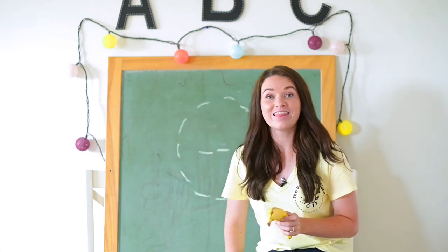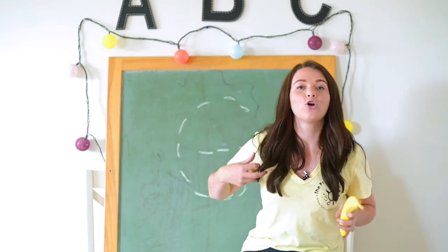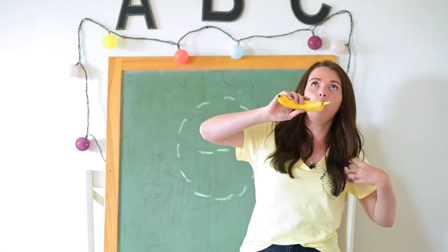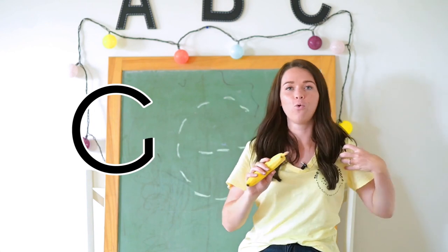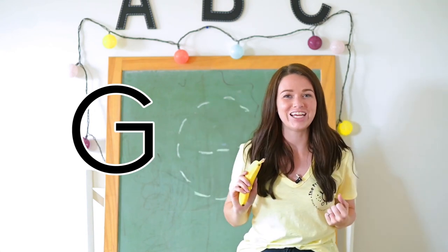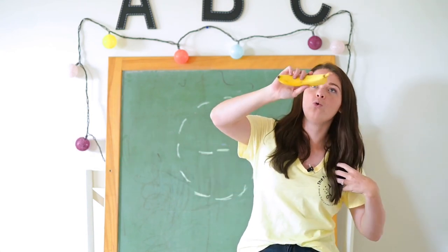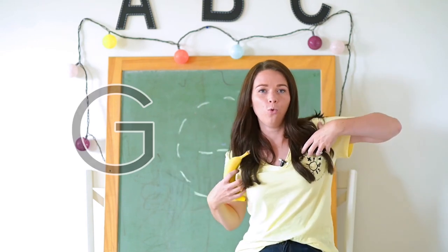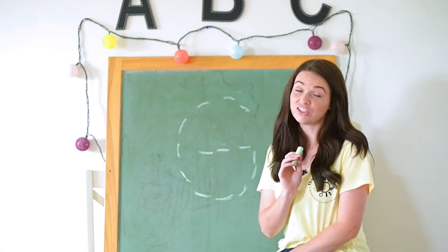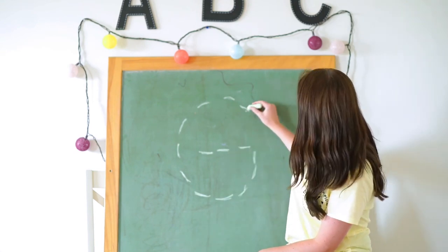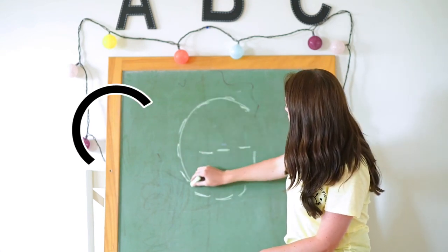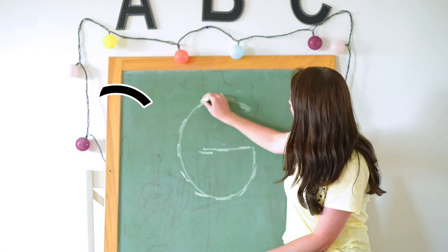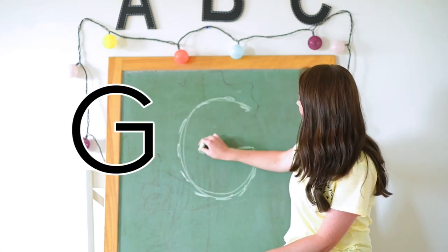Now let's do our very big gorilla voice and trace our G: around, curve, across G. One more time: around, curve, across G. Let's trace it on the blackboard now: around, curve, across G. Around, curve, across G. Very good.